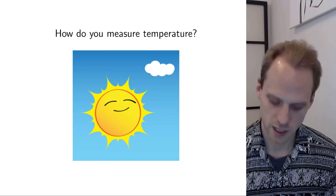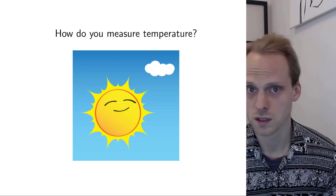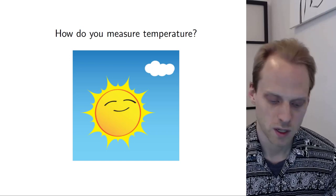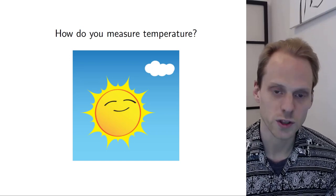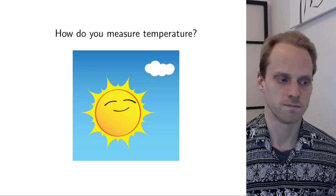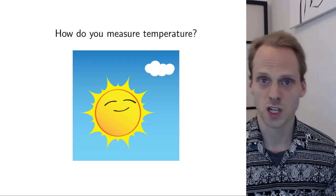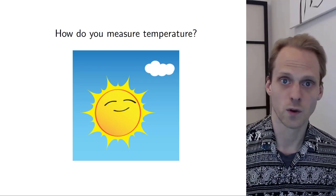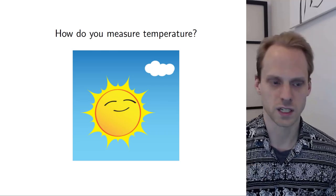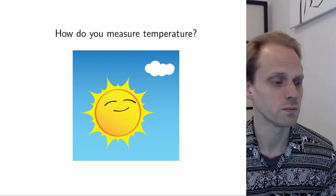So let's take a step back first and think about how do we measure something. What is measurement? Measurement is the ability to quantify a construct into numbers that we can use in statistics or in science. For example, we might want to measure temperature, and if we want to measure temperature, we need to get a number that says how hot or how cold it is.